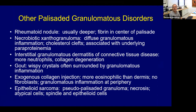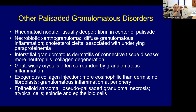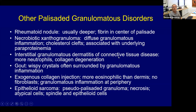Other palisaded granulomatous conditions: necrobiotic xanthogranuloma associated with paraproteinemia with lots of cholesterol clefts; interstitial granuloma annulare dermatitis with connective tissue disease tending to give more neutrophils and collagen degeneration; gout surrounded by granulomatous inflammation; exogenous collagen filler injections giving palisaded granuloma with more eosinophilic collagen; and epithelioid sarcoma, which gives a pseudopalisaded granuloma — actually a neoplasm undergoing necrosis with atypical epithelioid cells and possible mitotic figures.